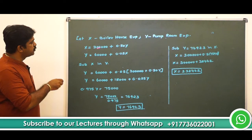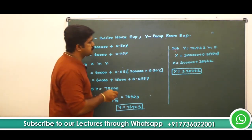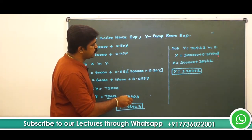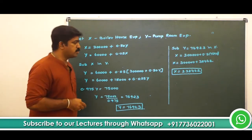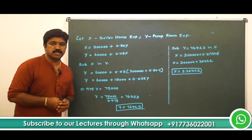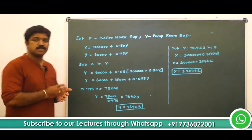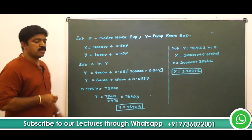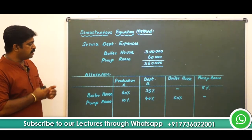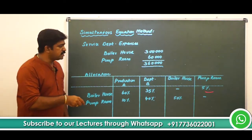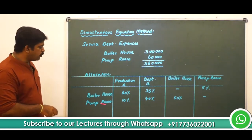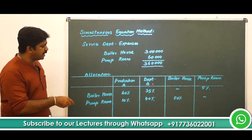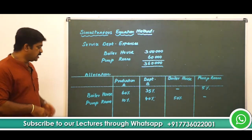Now substitute y into x: x = 3,00,000 + 0.5 × 76,923 = 3,00,000 + 38,462 = 3,38,462. So boiler house expense x = 3,38,462. Now we have the total cost of both service departments. The allocation to pump room is already factored into x, and the allocation to boiler house is already factored into y, so we allocate only the remaining shares to production departments A and B.